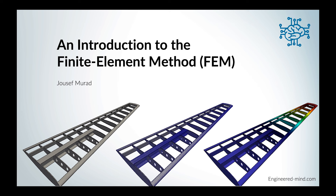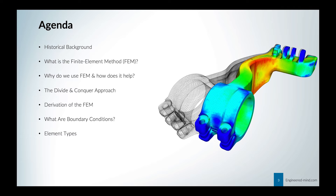I want to give you a brief overview of the historical background of the finite element method and how it all began. Then we will jump to what the finite element method is, how we use it and how it helps us, what is the so-called divide-and-conquer approach. We will mathematically derive the equations for the finite element method and talk about boundary conditions. Last but not least, we will talk briefly about element types.